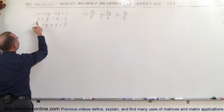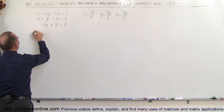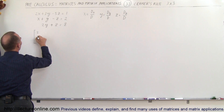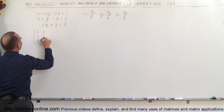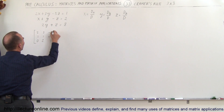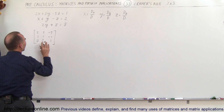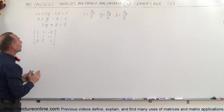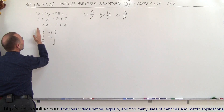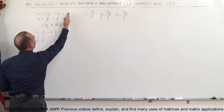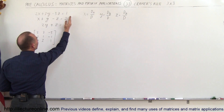First, we take the matrix of coefficients for x, y, and z: that's 2, 1, and 0 in the first row; 3, 1, and 2 in the second row; and minus 5, minus 1, and plus 1 in the third row. We're going to find the determinant of this matrix, and then do it again by replacing the x coefficients, the y coefficients, and the z coefficients by the constants in each case.